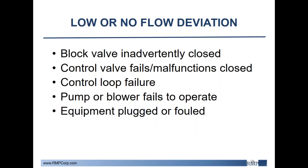The first deviation is low or no flow. Common causes include block or control valves malfunctioning or being inadvertently closed — either by an operator or due to mechanical failure, possibly from loss of power. It is important to note whether valves are normally closed or normally open, as well as their fail-safe positions, as a good P&ID would indicate these. Other causes in a low flow deviation include control loop failures, pumps or blowers failing to operate, or equipment getting plugged or fouled, such as filters, strainers, or heat exchangers.